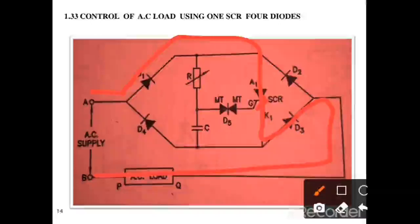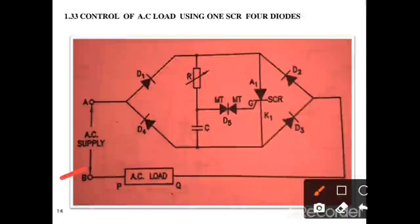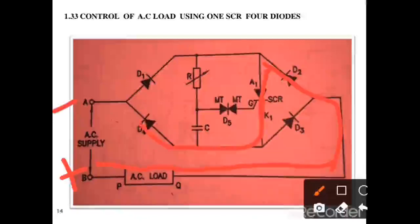When A becomes positive with respect to B, the SCR fires and the load current flows from A through D1, through SCR, through D3, through the load, and back to B. During the negative half cycle, when B becomes positive with respect to A, the SCR fires and the load current flows from B through the load, through D2, through SCR, through D4, back to A.